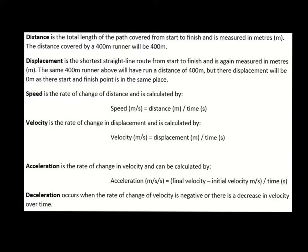Speed is the rate of change of distance. Every time we say 'rate of change' we effectively mean divided by time. Speed is measured in metres per second: distance in metres divided by time in seconds. So for a 100 metre runner who runs 100 metres in 10 seconds, it would be 100 divided by 10, which equals 10 metres per second.